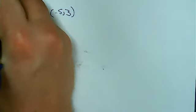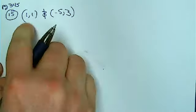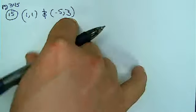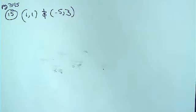Alright, so we're talking number 15 on page 345. My points are 1, 1 and negative 5, 3, and the goal is to write the equation of the line that includes those two points.